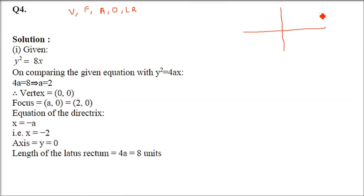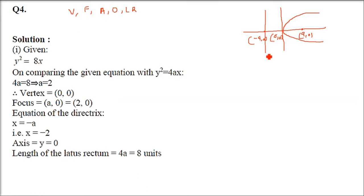Let me recall what we learned in theory. If this is a parabola, it can be in any orientation. Here, focus is at (a, 0), vertex is at (0, 0), and at (-a, 0) there is a directrix line parallel to the y-axis. The length from the focus perpendicular to the axis is the latus rectum, and the axis here is the x-axis.